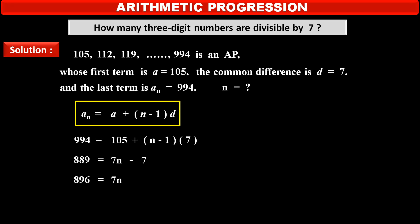Therefore, adding 7 on both sides we get 896 is equal to 7N. Therefore, dividing both sides by 7 we get N is equal to 128. Thus, there are total 128 3-digit numbers divisible by 7.